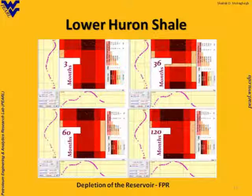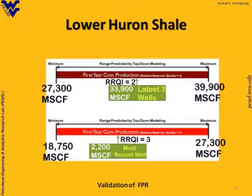One way that I calibrate that: I take the latest wells that I have drilled, take those out of my database, perform this analysis, then put those wells back in to see if they fit. When you do that in this particular case for RRQI2, our analysis showed that your first-year cumulative production is going to be between 27 MCF to 39 MCF. The new well that we used as a blind data set came out to be 33.9, so it falls right there. That tells you your partitioning is correct — that's how you calibrate your partitioning.